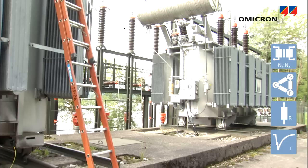Measuring ratio, magnetization current, and static and dynamic winding resistance is faster, safer, and easier with the CPSB1 switchbox.